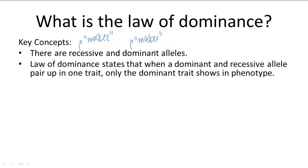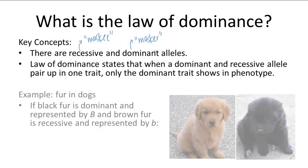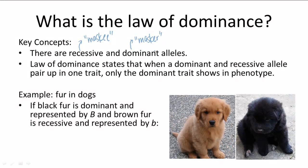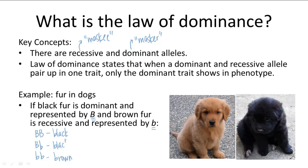When a dominant and recessive allele pair up together in a genotype, only the dominant trait will show in the phenotype. So let's return to our dog fur example. If the black fur allele is represented by a big B and is dominant, and the brown fur allele is represented by a little b and is recessive, you have three possible genotypes: BB, Bb, or bb. BB and bb would code for black fur and brown fur respectively, because there's no other allele within the genotype. But Bb would not be a brown and black speckled dog — because we know that black fur is dominant, and because of the law of dominance, Bb will code for black fur in the phenotype.